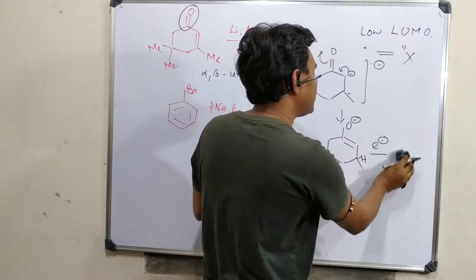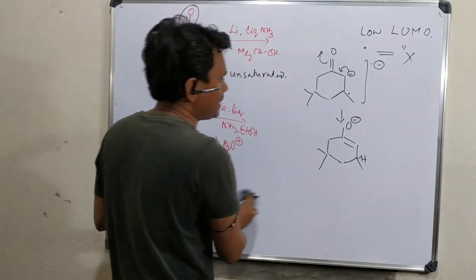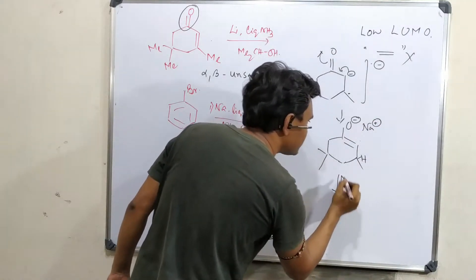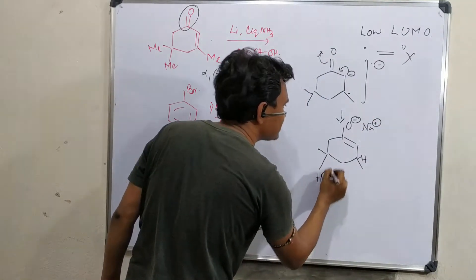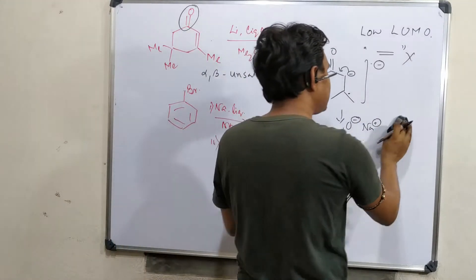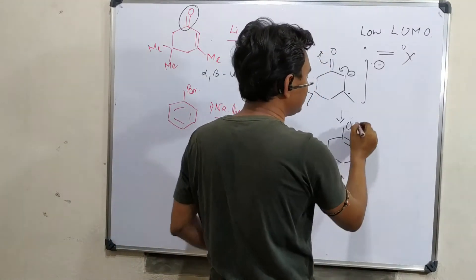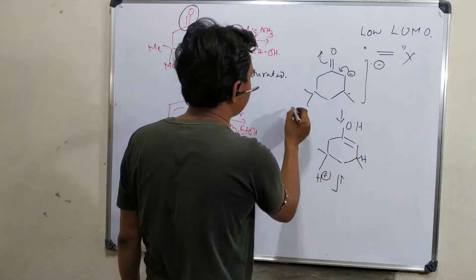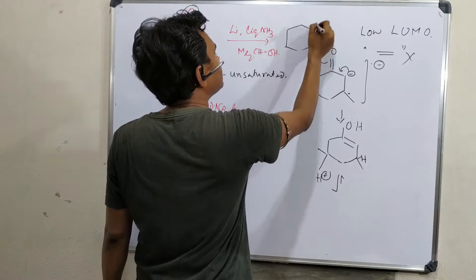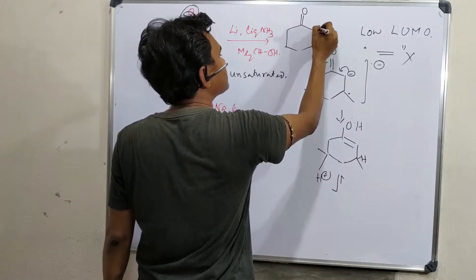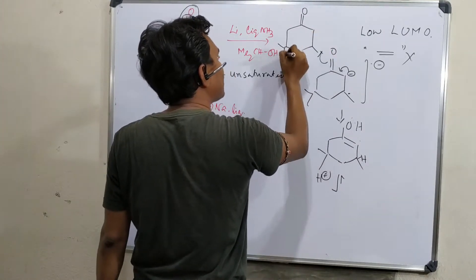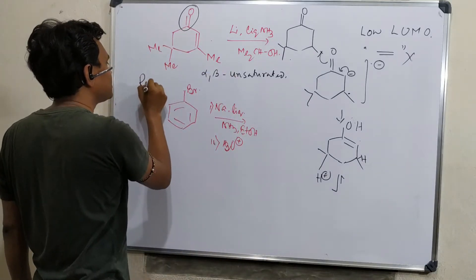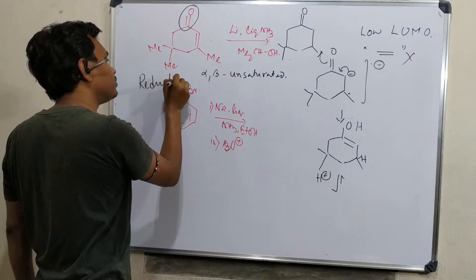Right now it is an enolate. Hydrolysis in the presence of dilute acid will first protonate this enolate, and this enol undergoes tautomerism to ultimately produce the keto isomer. This is the alpha-beta double bond reduction — the double bond is selectively reduced.